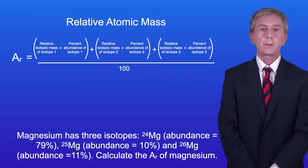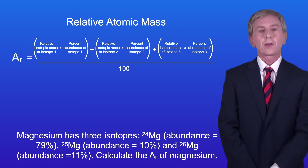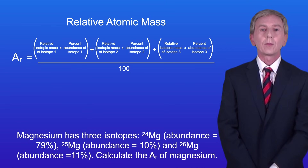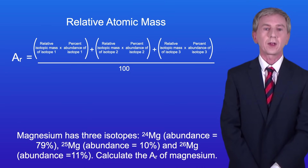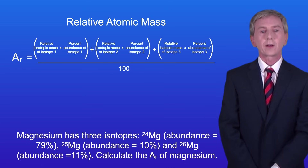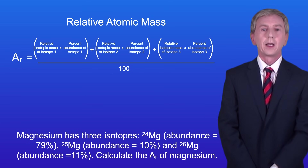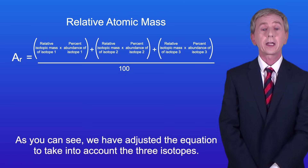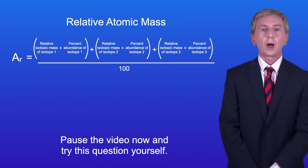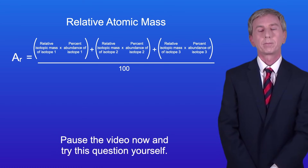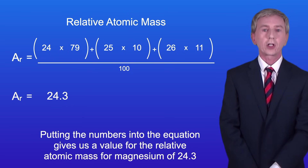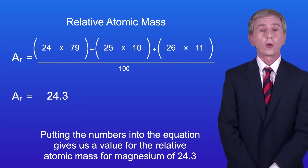Here's one final example. Magnesium has three isotopes: magnesium-24 with an abundance of 79%, magnesium-25 with an abundance of 10%, and magnesium-26 with an abundance of 11%. Calculate the relative atomic mass of magnesium. As you can see, we've adjusted the equation to take into account the three isotopes — pause the video now and try this question yourself. Putting the numbers into the equation gives us a relative atomic mass of magnesium of 24.3.